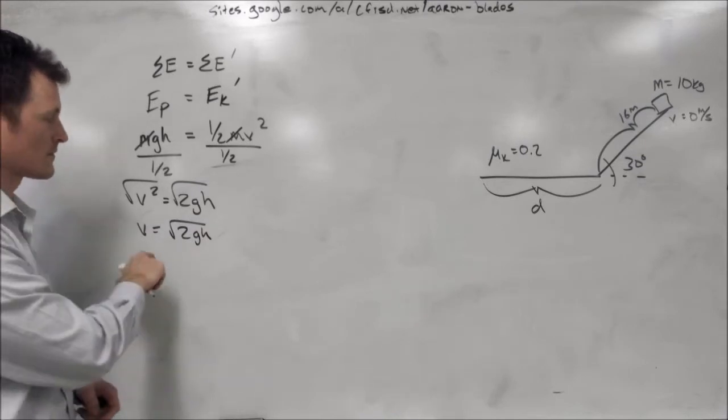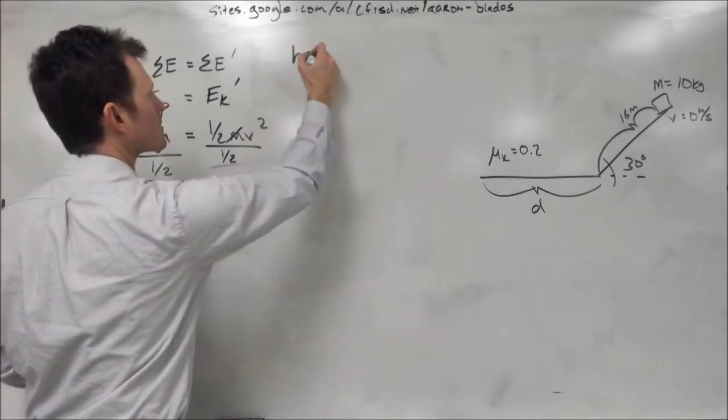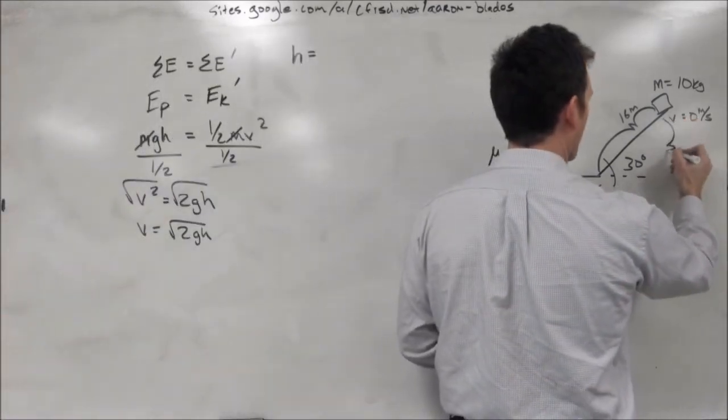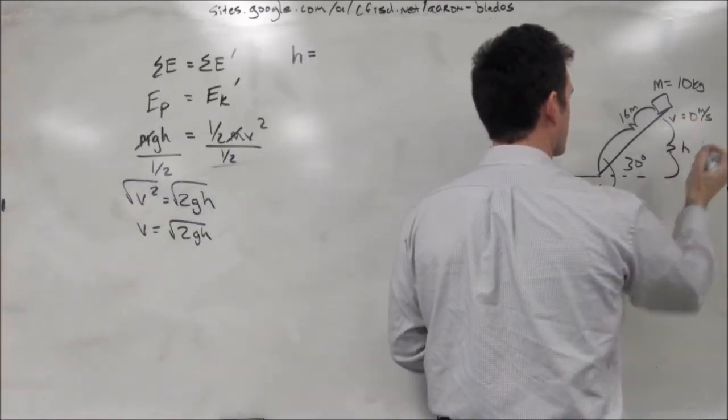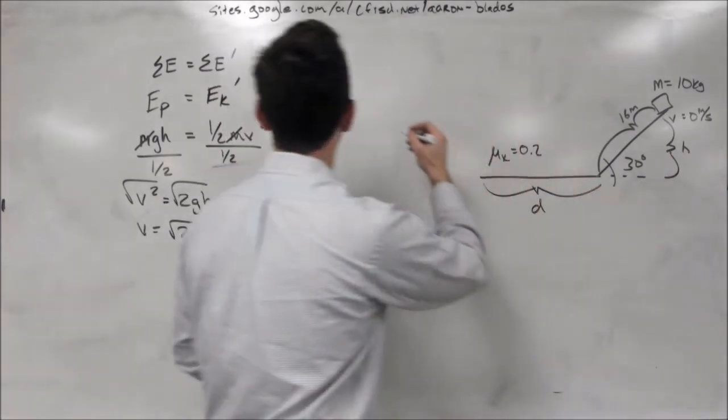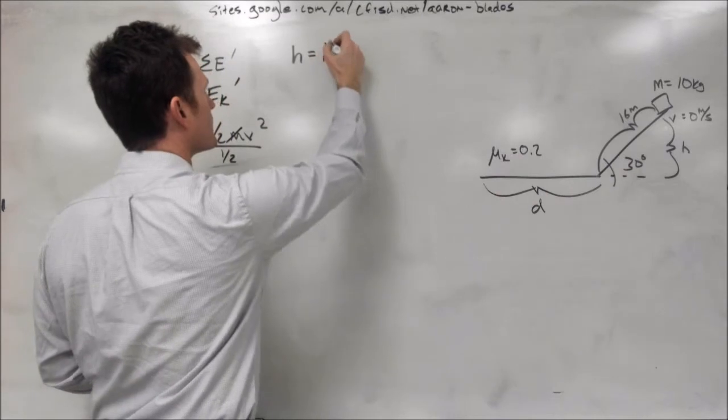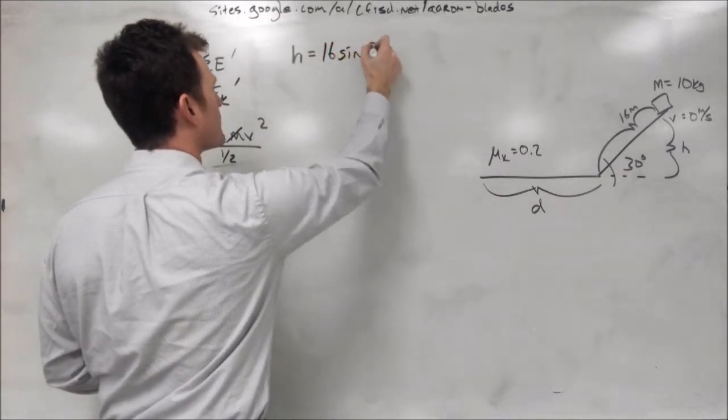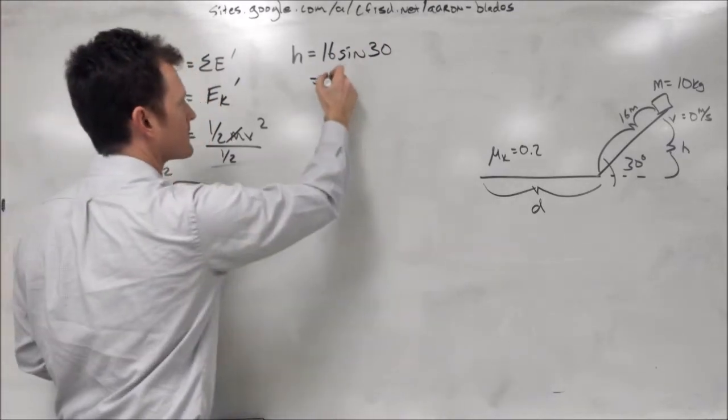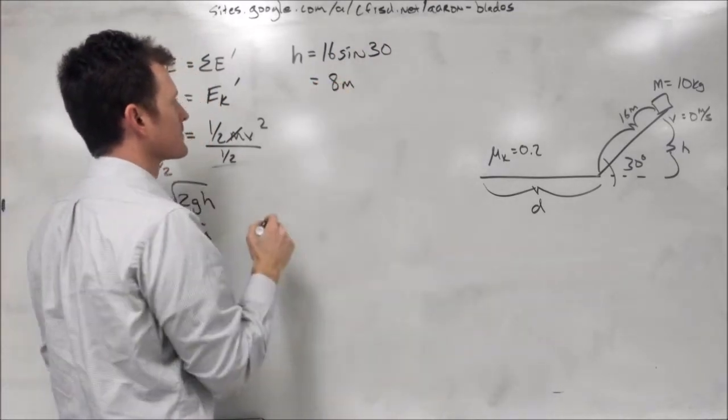We know both of those quantities, or at least we can calculate them. H is the height off the ground, and since we are given 16 meters down the plane, we have to actually calculate how far above the ground the box is. H in this case is 16 times the sine of 30 degrees. Sine of 30 degrees is one half, so we end up with 8 meters off the ground.